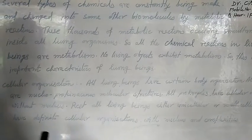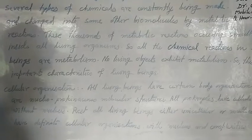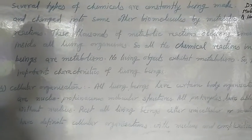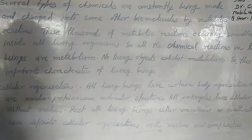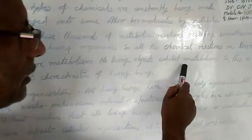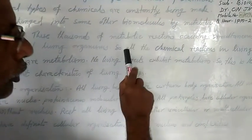Metabolism consists of two terms: anabolism and catabolism. Catabolism means the breakdown of molecules — it is the decomposition reaction — and anabolism is the synthetic process in which molecules are formed. Non-living objects do not exhibit metabolism. So metabolism is an important characteristic of living beings.